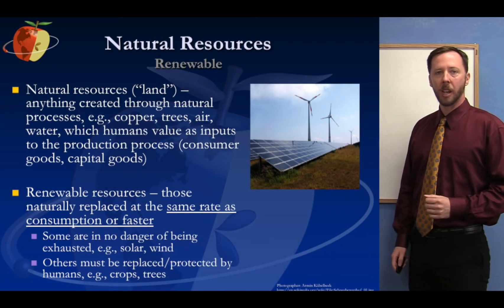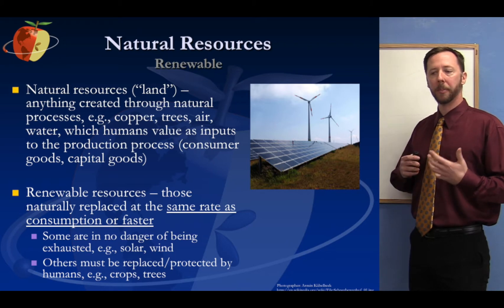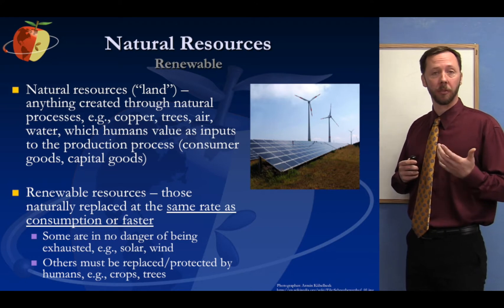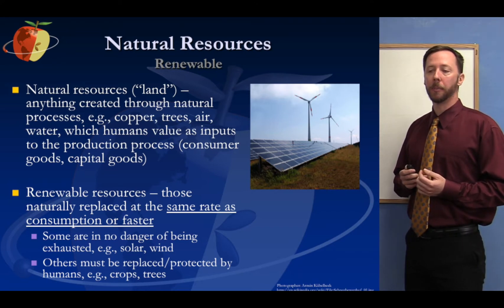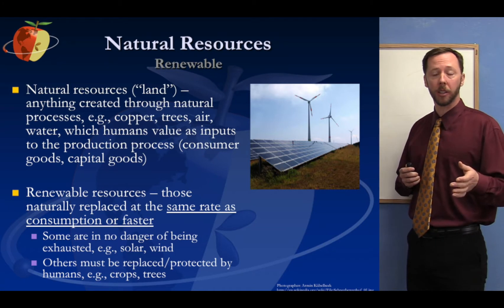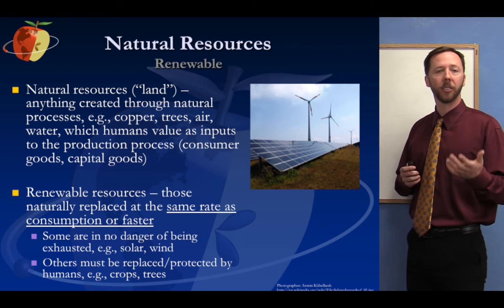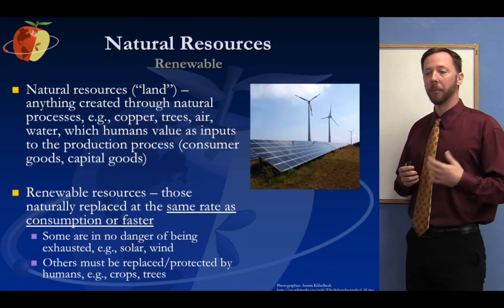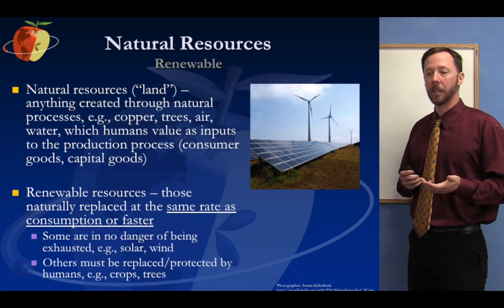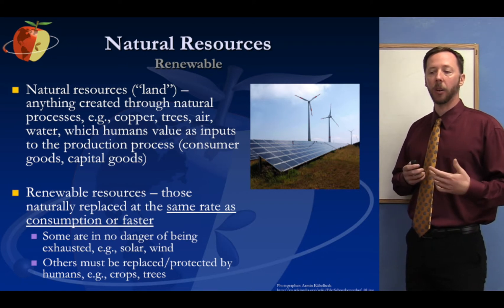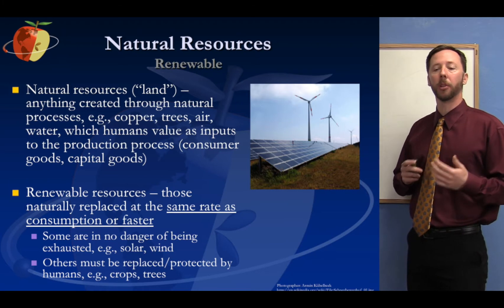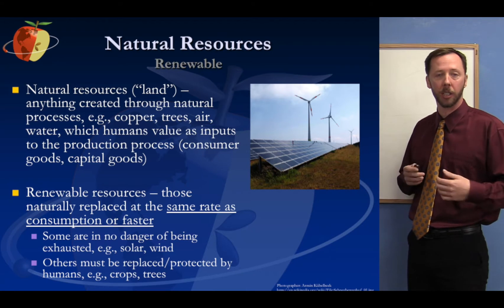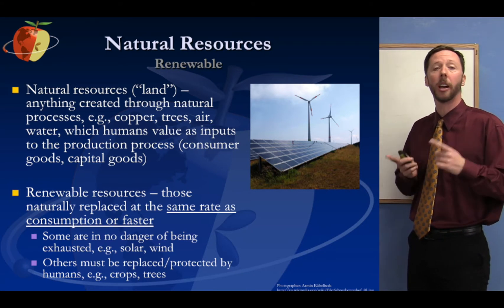Natural resources are things that come from the land. Land is one of our factors of production that we talk about in economics. So, timber that grows on the land, minerals, oil, things that are extracted from the land, water that's in the land — all of these are considered natural resources. These are things that we use as inputs to the production process to produce the outputs we want: consumer goods or capital goods, meaning goods that are used to produce other goods.